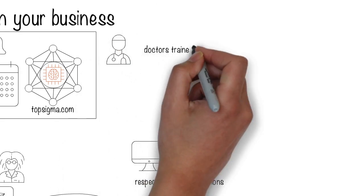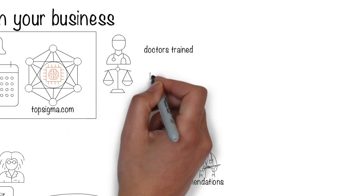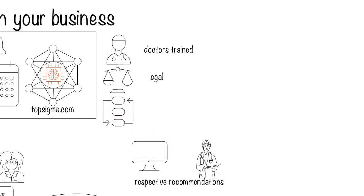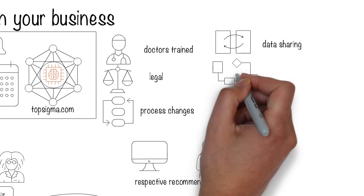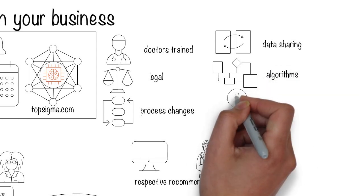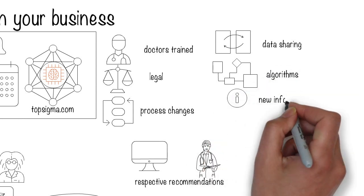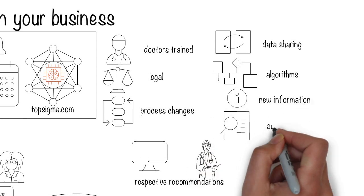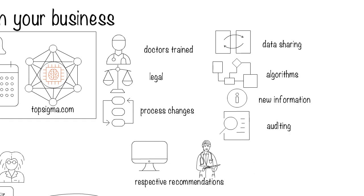There are legal and ethical decisions to be made. Processes might change with different sets of approvals. Data has to be shared across different areas. New algorithms may be introduced and drive change. New information may become available. Audit and documentation requirements have to be met. Those are to name a few.